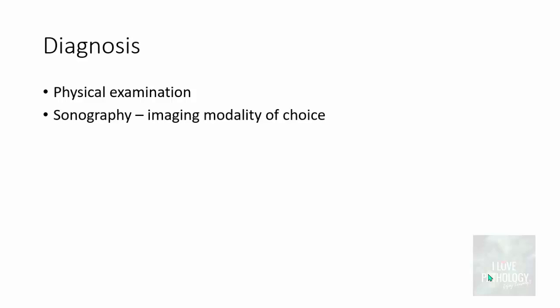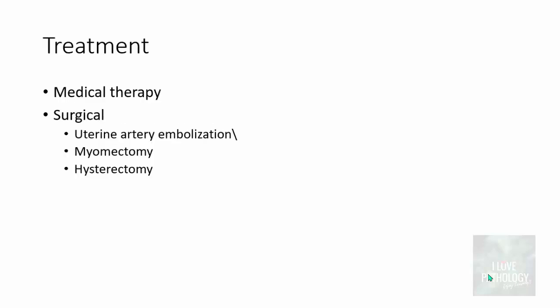How do one diagnose a case of leiomyoma? Of course physical examination then the sonography is the imaging modality of choice. And once you diagnose, once a surgeon diagnose a case of leiomyoma, the treatment modality includes surgical and medical and surgical therapy. If the medical therapy doesn't work, surgical therapy in the form of uterine artery embolization, it could be just excision of the leiomyoma which is called as myomectomy. Or if the leiomyomas are too many or multiple, you excise the entire uterus that is hysterectomy is the treatment of choice.